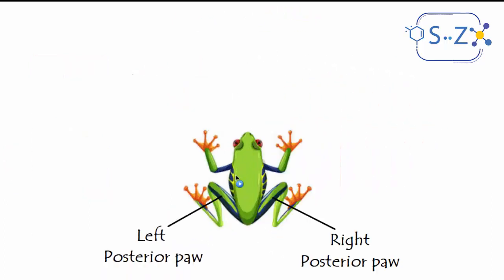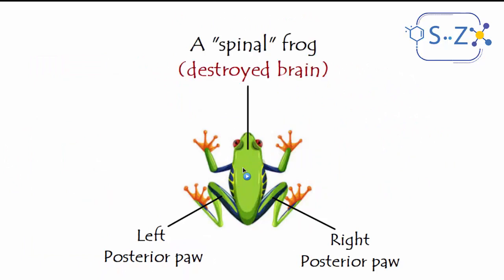First of all, we're going to study some experiments done on what we call a spinal frog. A spinal frog is a frog that has had its brain destroyed — they destroy its brain and keep the spinal cord intact — and they make several experiments on it. Here is a quick anatomy of the frog's body.